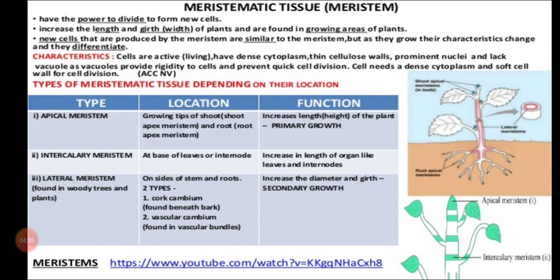The third point: new cells produced by the meristem are similar to the meristem. If they are similar, think about what kind of cell division that is. They will form similar to the meristem, but as they grow their characteristics change and they differentiate. First they form from the meristematic tissues, but later, once they become matured, they will not undergo any further division. At that stage, meristematic tissues become permanent tissues, and in permanent tissues you cannot see cell division.